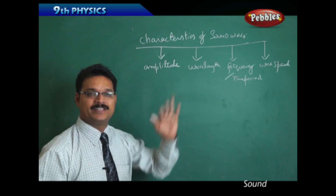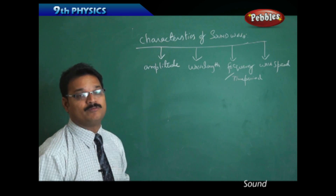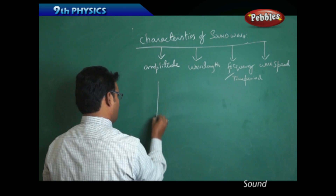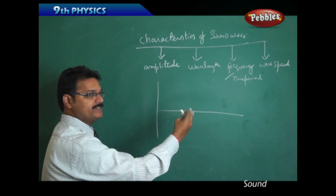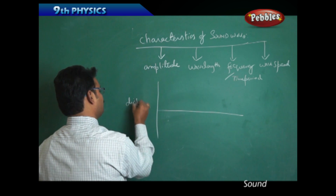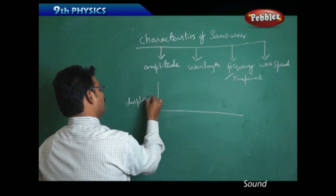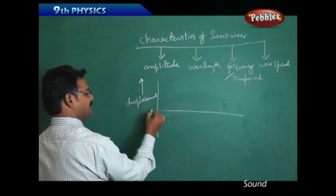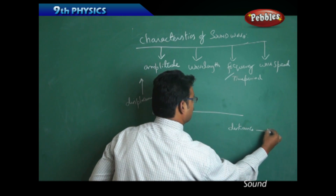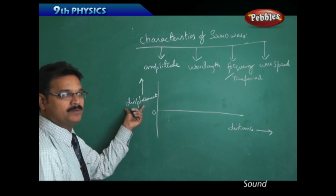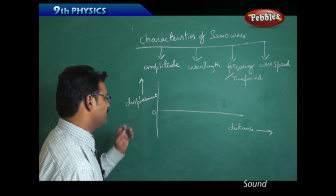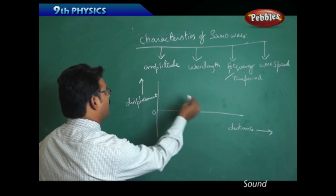To explain each characteristic in detail, we depend upon the waveform. Let me draw a graph. On the y-axis I'm taking displacement, and on the x-axis I'm taking distance. Displacement may be in meters or centimeters; distance also in centimeters — SI units.